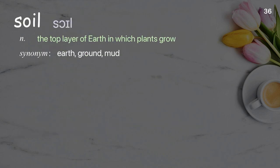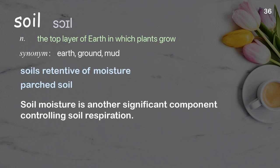Soil: the top layer of earth in which plants grow. Examples: soils retentive of moisture, parched soil. Soil moisture is another significant component controlling soil respiration.